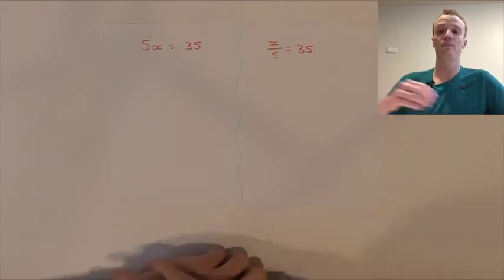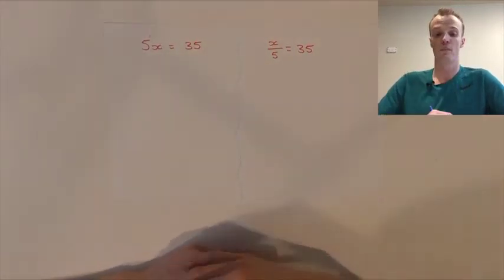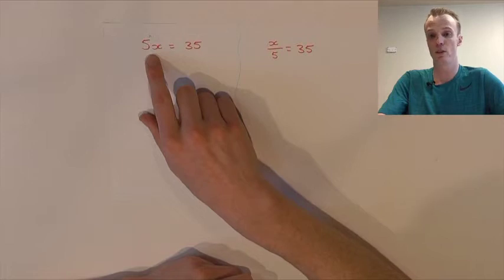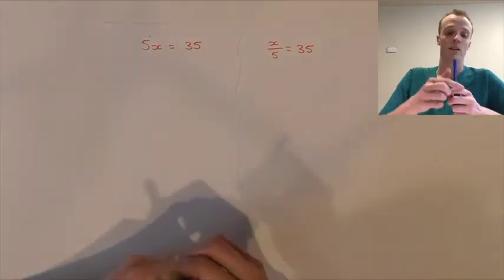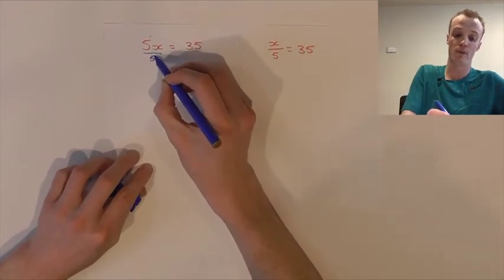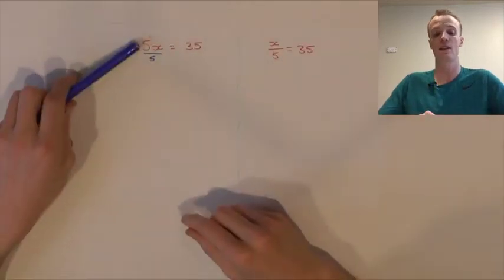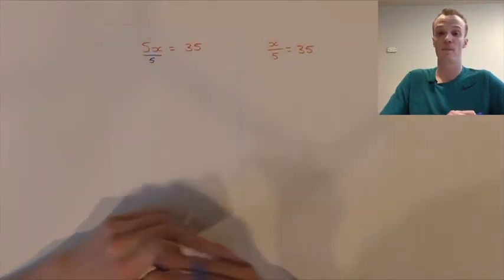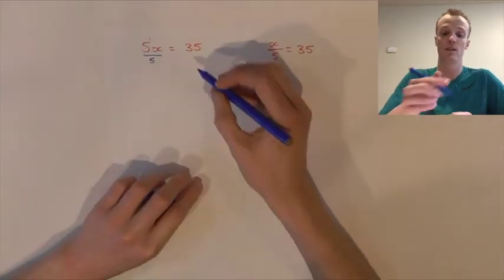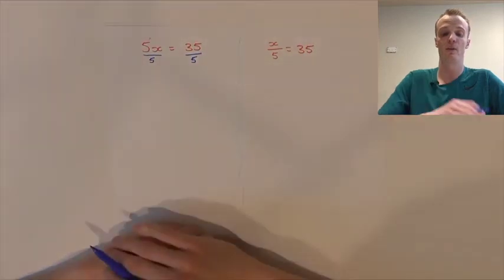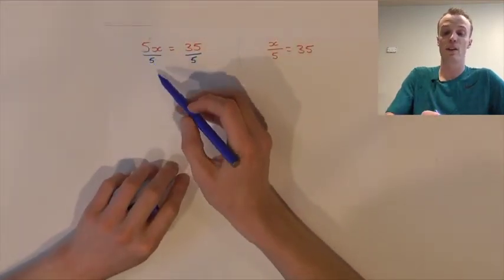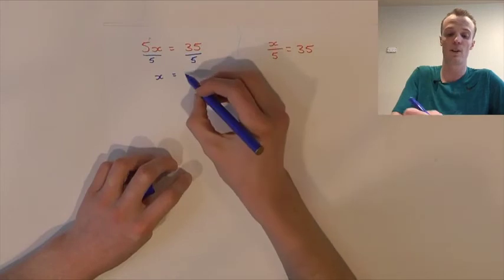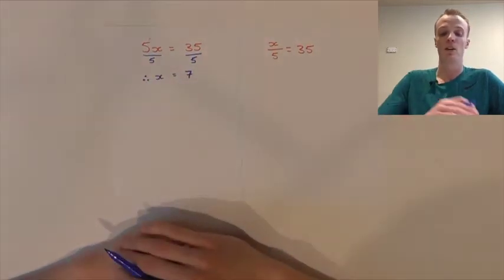Our goal is the same — we want to get the pronumeral on its own. The 5 is multiplying, so we need to do the inverse of multiplication, which is division. If we divide this whole side by 5, these two values will cancel out and we're just left with our pronumeral x. However, whatever we do to one side we must do to the other, so we also have to divide the right-hand side by 5. 35 divided by 5 we know to be 7, so our x value should equal 7.